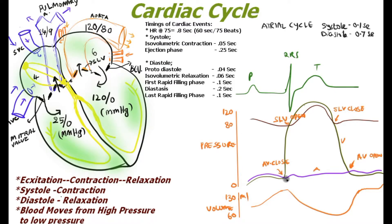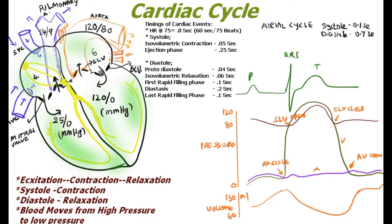As soon as the atria finishes its contraction, the pressure drops in the atria, while the ventricular pressure starts to build up gradually. Once excitation hits the ventricle, the pressure shoots up from zero toward 120. This phase is known as isovolumetric contraction, lasting around 0.05 seconds, where ventricular pressure increases but no blood is ejected.